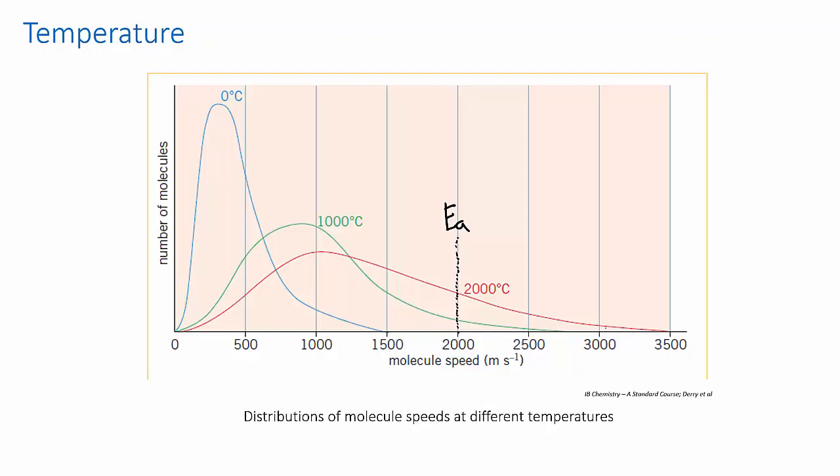Now, if you increase the temperature of the reaction to 1000 degrees C, you can see that the proportion of molecules with the required energy is still fairly small, but it is finite. The reaction will occur. Not very fast, but it would be measurable.